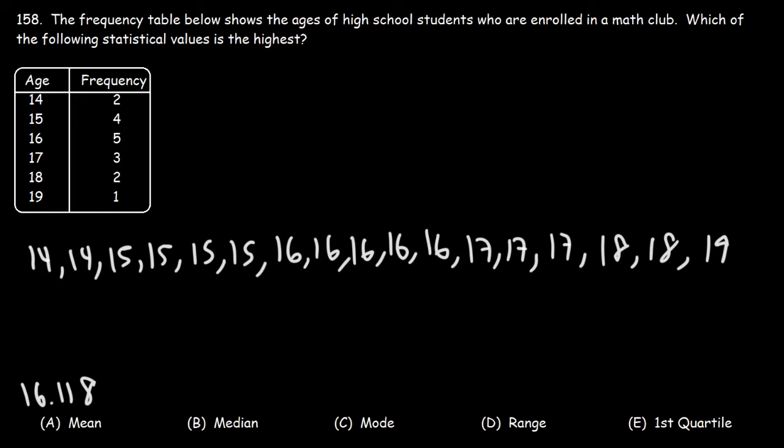The median is basically the middle number. So we're going to eliminate numbers on the left side and on the right side until we find what number is in the middle. So we can see that the median is 16 in this example.